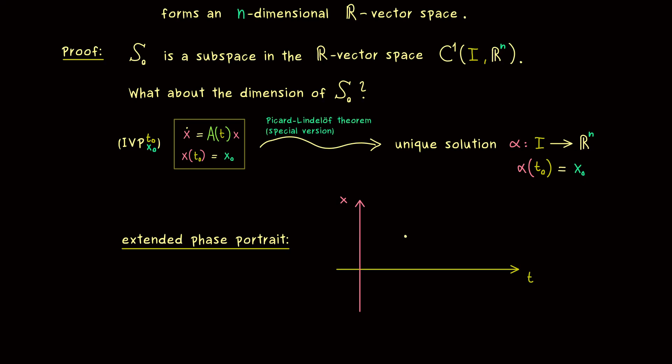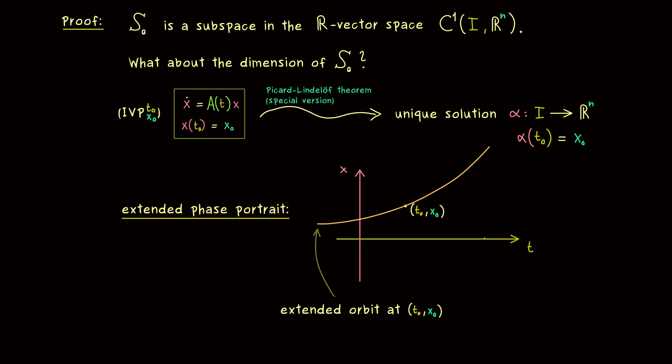And exactly this property we can visualize in an extended phase portrait. I call it extended here, because we have to include the time variable as well. This means we have a one dimensional time variable here and an n dimensional space variable there. And now you see, one point in this plane represents an initial value t_0, x_0. Moreover, through this point we find our unique solution curve of alpha. So for example, it could look like this and we could actually call it the extended orbit of alpha.